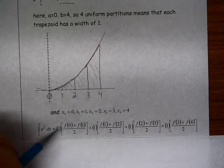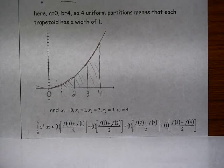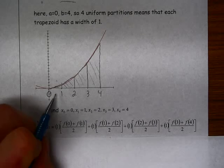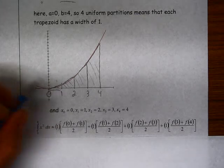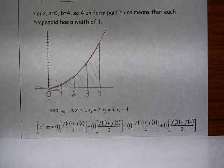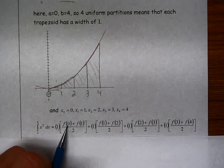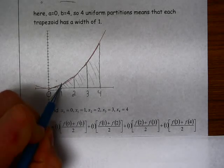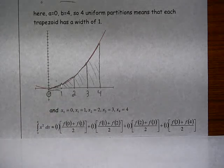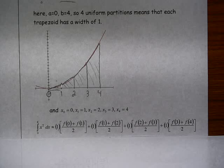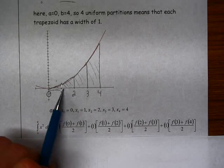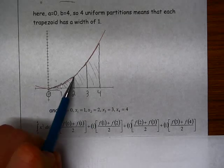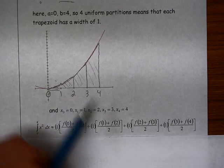And then the next thing is to write out your trapezoidal approximation in function notation. So I have the width is 1, and then b1 and b2 are the function value at x equals 0. That's f of 0, and the b2 is this height right here, and it's defined as the function value at x equals 1. So it's those two added together divided by 2. The next trapezoid still has a width of 1. Now it's f of 1 plus f of 2 divided by 2, and so on.